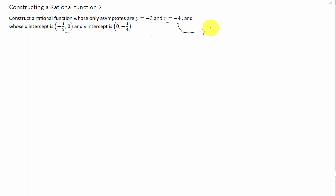And in this case the vertical asymptote tells us that we should have a factor of x plus 4 in the denominator. So we can start constructing our function down here. We need an x plus 4 in our denominator.